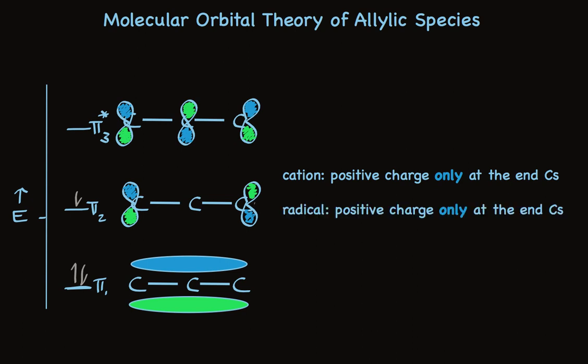And finally, for the anion, there's an additional electron. It also goes in the non-bonding orbital, and it brings with it an extra negative charge. And we know that that negative charge will be in this orbital, pi-2, at the end carbons, never at the center. Again, the very picture we get from our resonance structure theory.